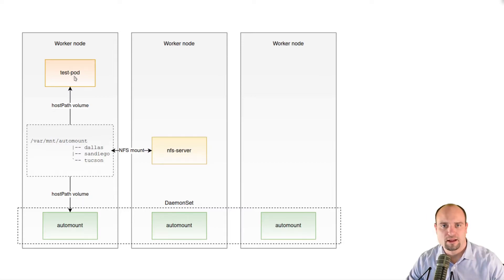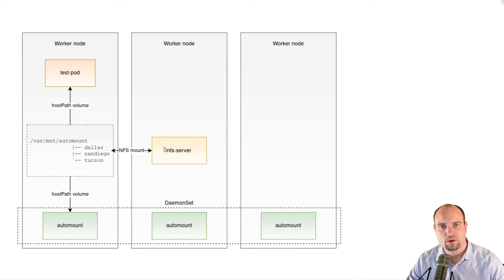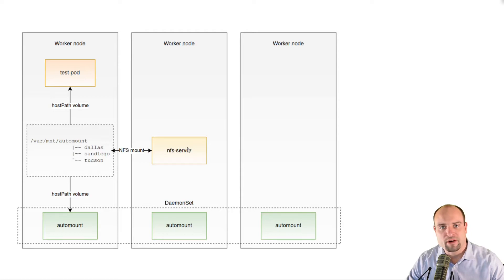The last component in this diagram is the NFS server. For the sake of the proof of concept I'm running this NFS server containerized directly on OpenShift. However, the idea is that you can bring your own NFS server, which may even be running somewhere externally.